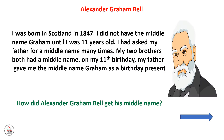Now let's read our text. Our text is about Alexander Graham Bell. I was born in Scotland in 1847. I did not have the middle name Graham until I was 11 years old. I had asked my father for a middle name many times. My two brothers both had a middle name. On my 11th birthday, my father gave me the middle name Graham as a birthday present.